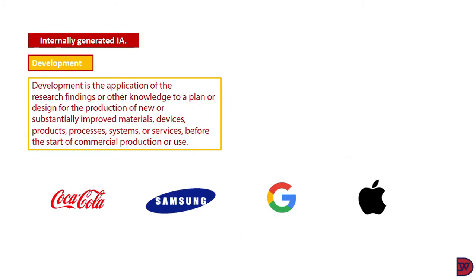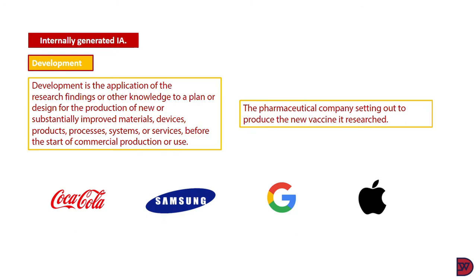Development, on the other hand, is the application of research findings or other knowledge to a plan or design for the production of new or substantially improved materials, devices, products, processes, systems, or services before the start of commercial production or usage. So after you have researched and found the knowledge, you move a step further into putting it into action to arrive at something that can generate economic benefits. For instance, the pharmaceutical company setting out to produce the new vaccine that it researched to acquire the knowledge.